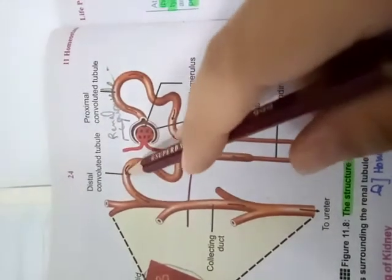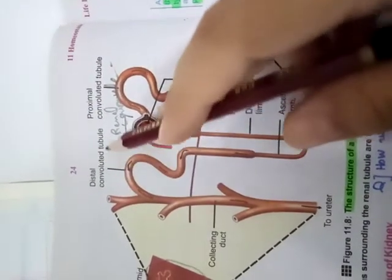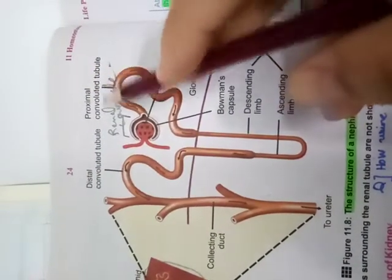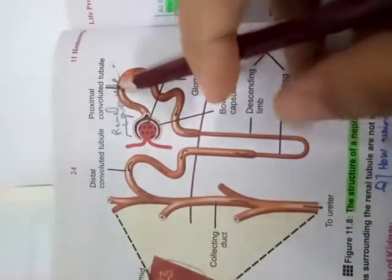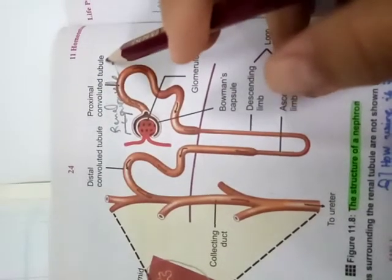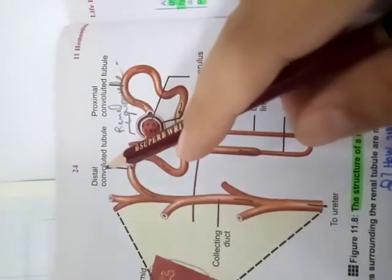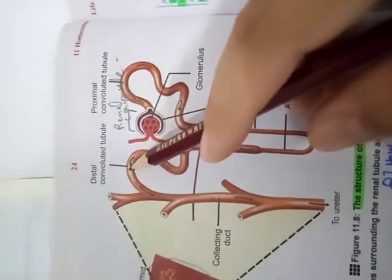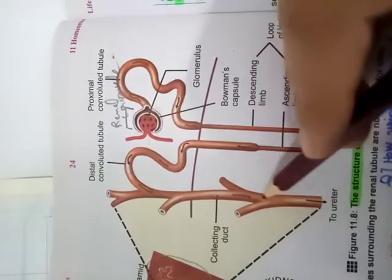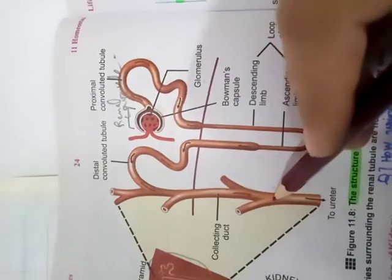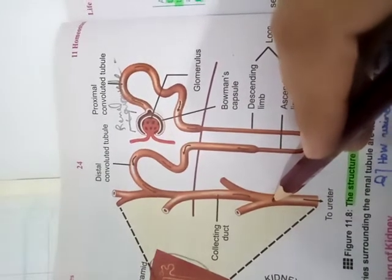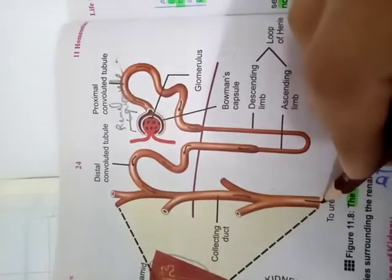After the loop of Henle we have the distal convoluted tubule. Proximal means 'start' and distal means 'end'; convoluted means it is highly coiled. The proximal convoluted tubule is the first part of the tubule; the distal convoluted tubule is the last part. The distal convoluted tubule connects to the collecting ducts, which lead to the papillary ducts. From here the urine is produced and exits.